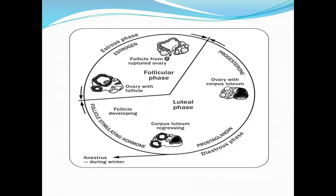The feedback mechanism is wherein there is regression of the production of certain hormones, which is detected by the nervous system, and another hormone will be produced if there is a decrease or increase in certain hormone levels. That's what we call the feedback mechanism.